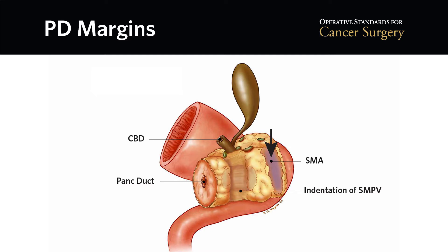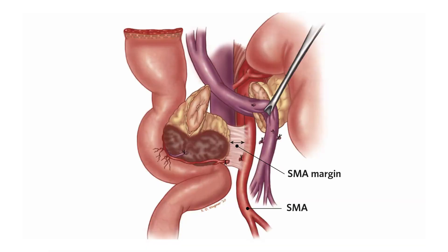This assumes that all of the tissue between the pancreatic uncinate process and the superior mesenteric artery have been removed with the surgical specimen — the proper technique for all patients with cancers of the head of the pancreas. This picture highlights the tissue between the uncinate process and the superior mesenteric artery, labeled as the SMA margin, which must be removed in all cases.